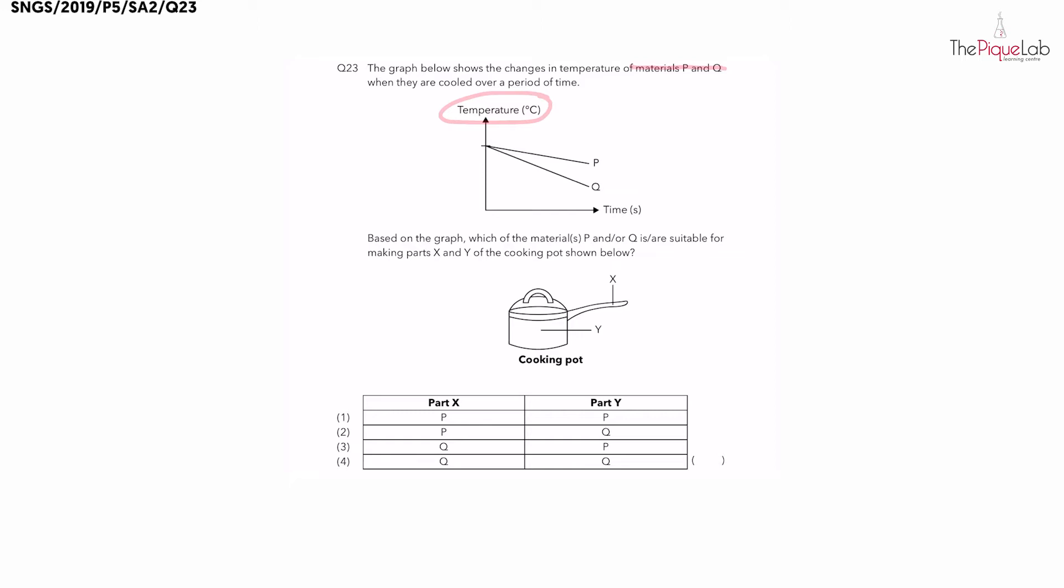Now better conductors of heat not only gain heat faster but also lose heat faster. Looking at the graph here, what is happening to the temperature? Temperature is going down which means both materials are losing heat, but which line is going down faster? We have the line for material Q, so this means Q is losing heat faster than P, making Q a better conductor of heat than P.